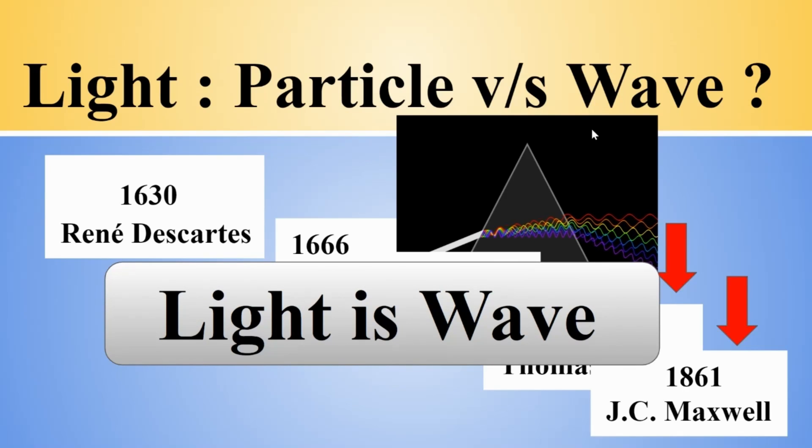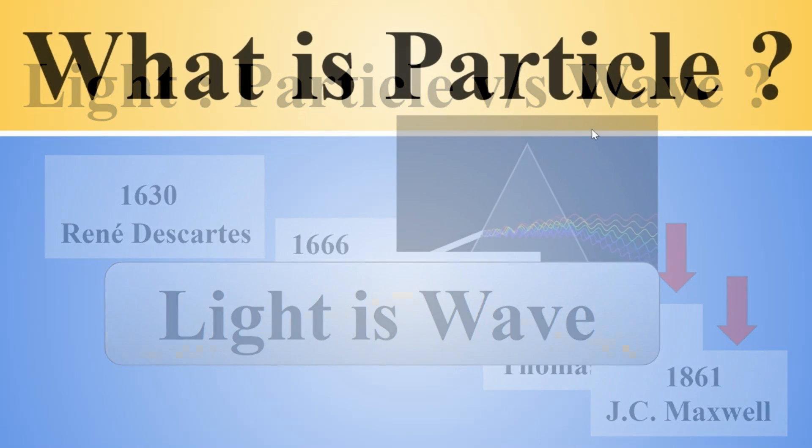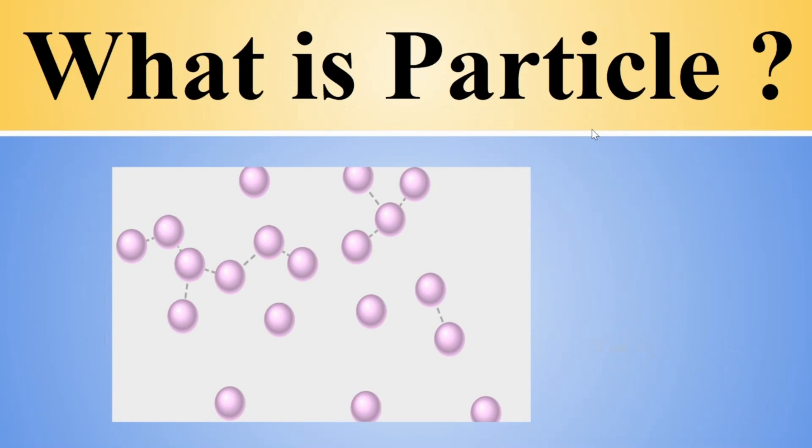However, it arose again in the next century in a new era of modern physics. Before talking about what was the nature of light in the era of modern physics, since here we are talking about particles and waves, we should ask the question very clearly: when we are talking about particles and waves, what are we exactly talking about?